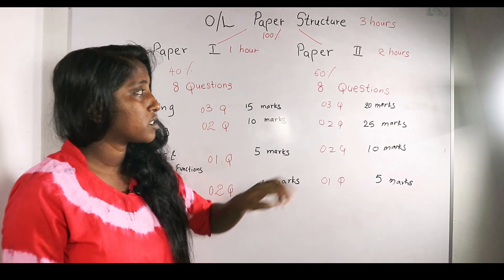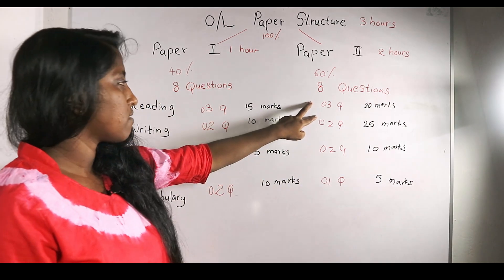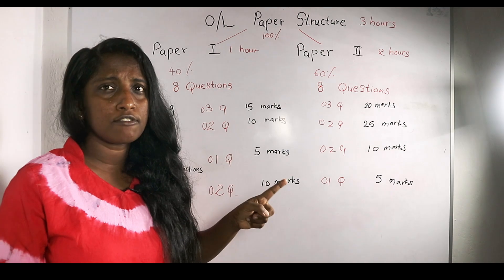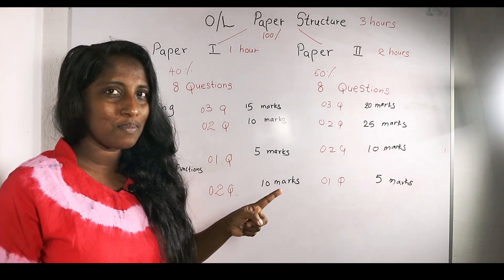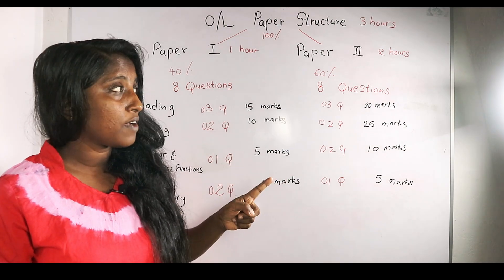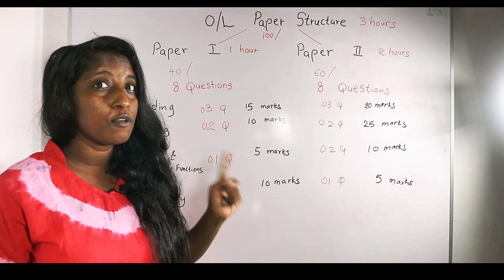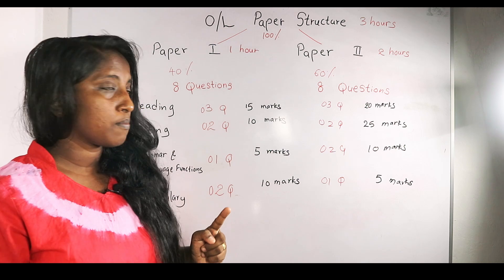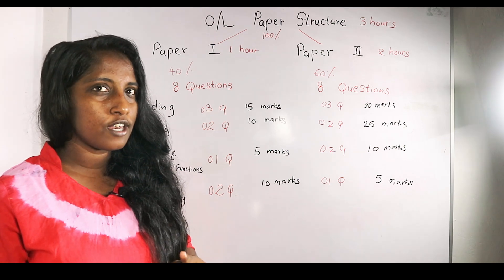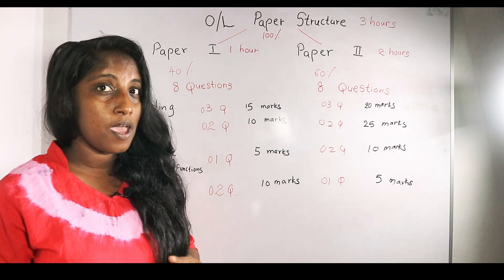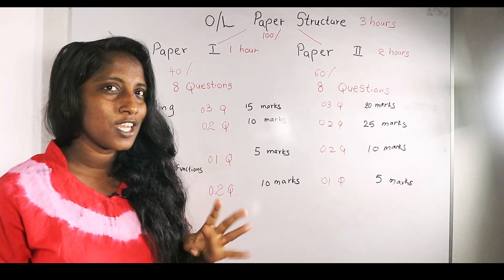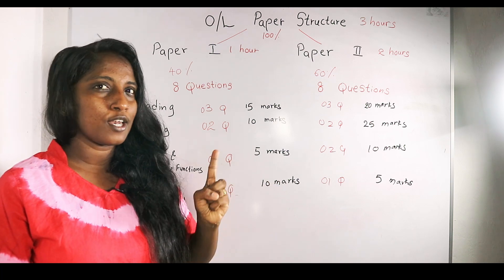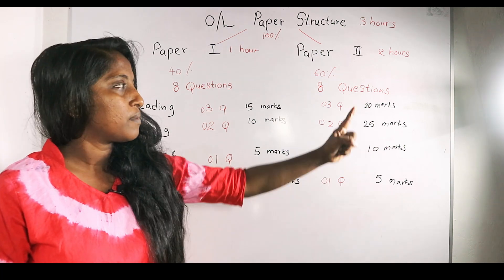You all get 25 marks for writing. Grammar and language functions — 2 questions, 10 marks. Vocabulary — 1 question, 5 marks. If you have 3 reading questions, you will need to answer 10 questions total.